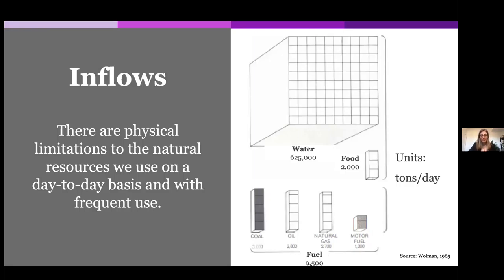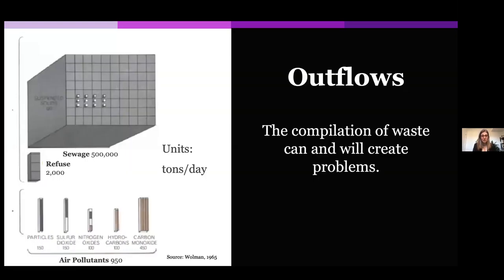In terms of outflows — what comes out of the cities at the other end — a quantification for that hypothetical city shows sewage and refuse. Refuse is just garbage and the suspended solids in the sewage, and at the very bottom are the air pollutants that are quantified. This gives a sense of just how much of this kind of pollution results from 1 million people.